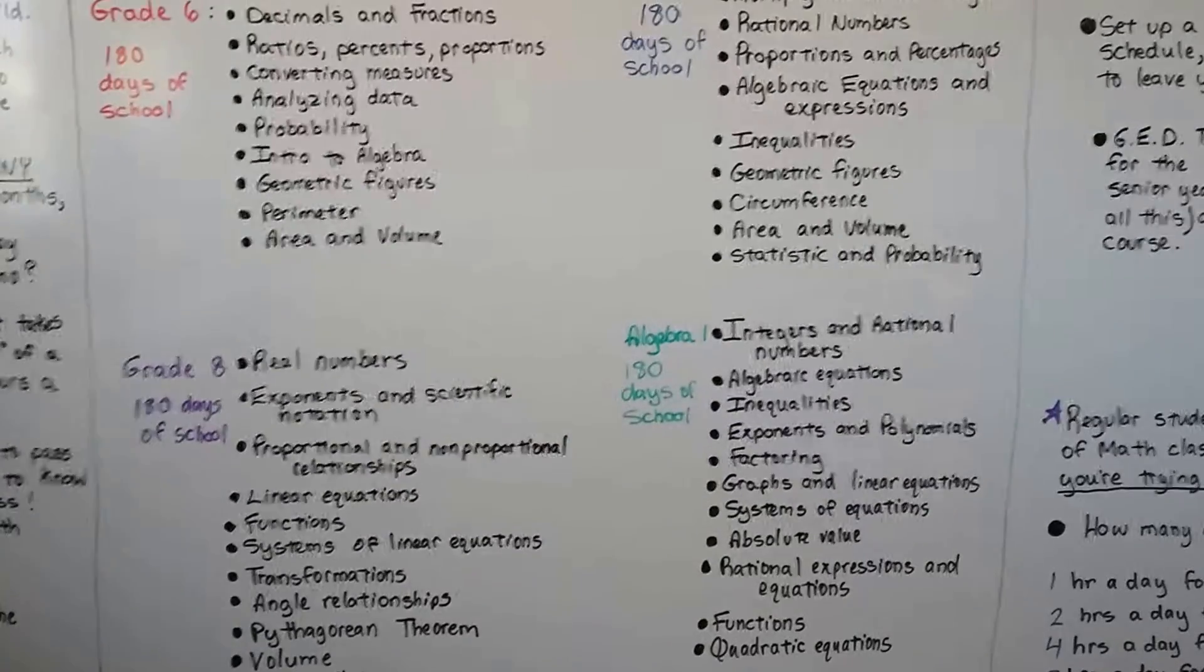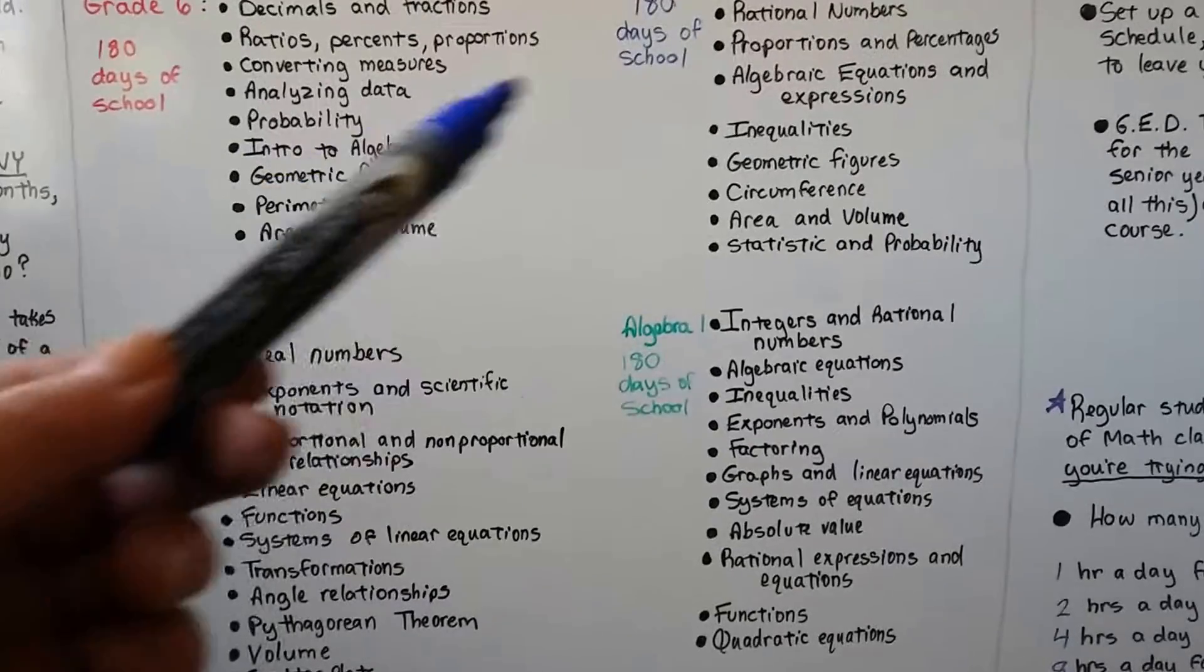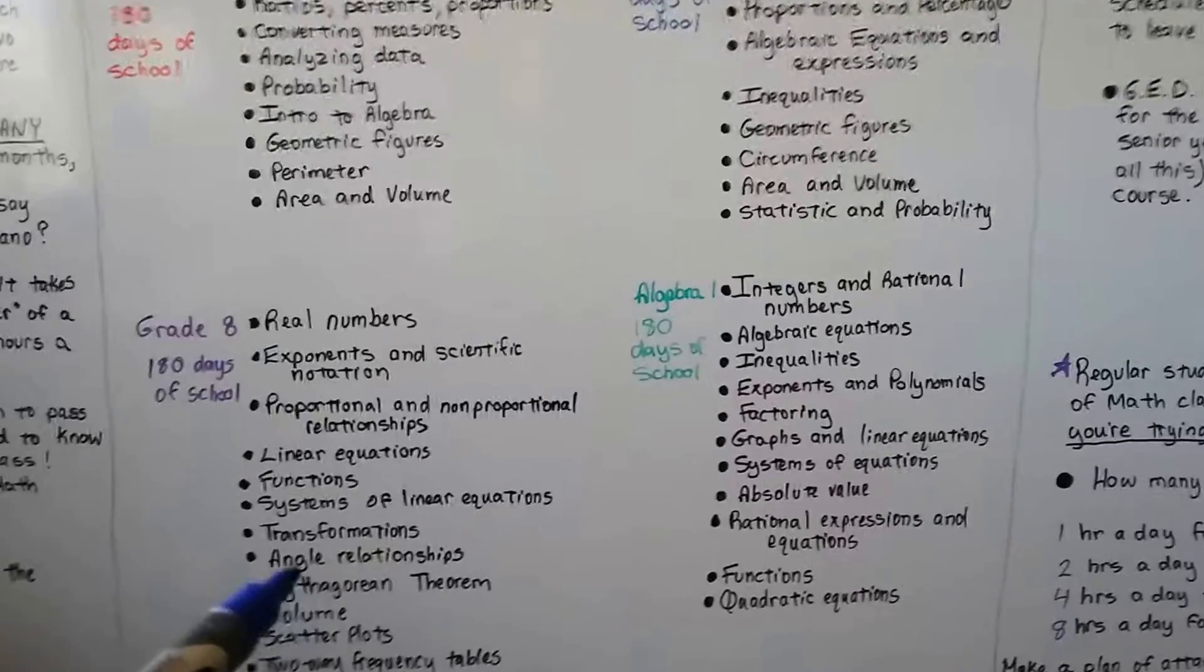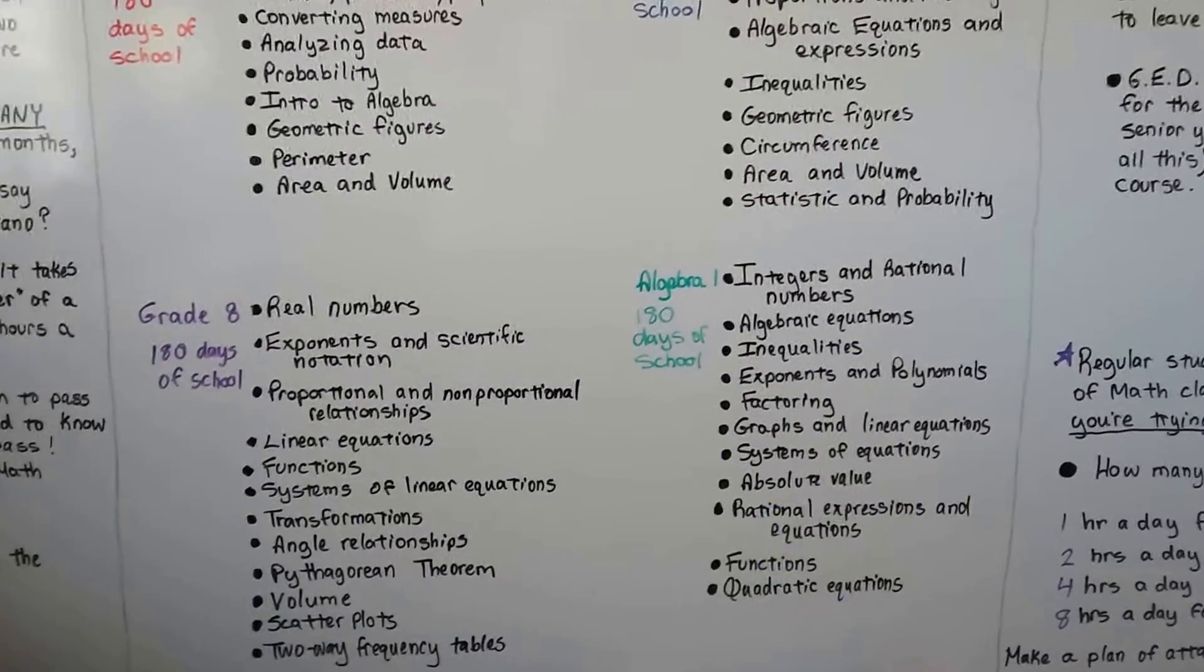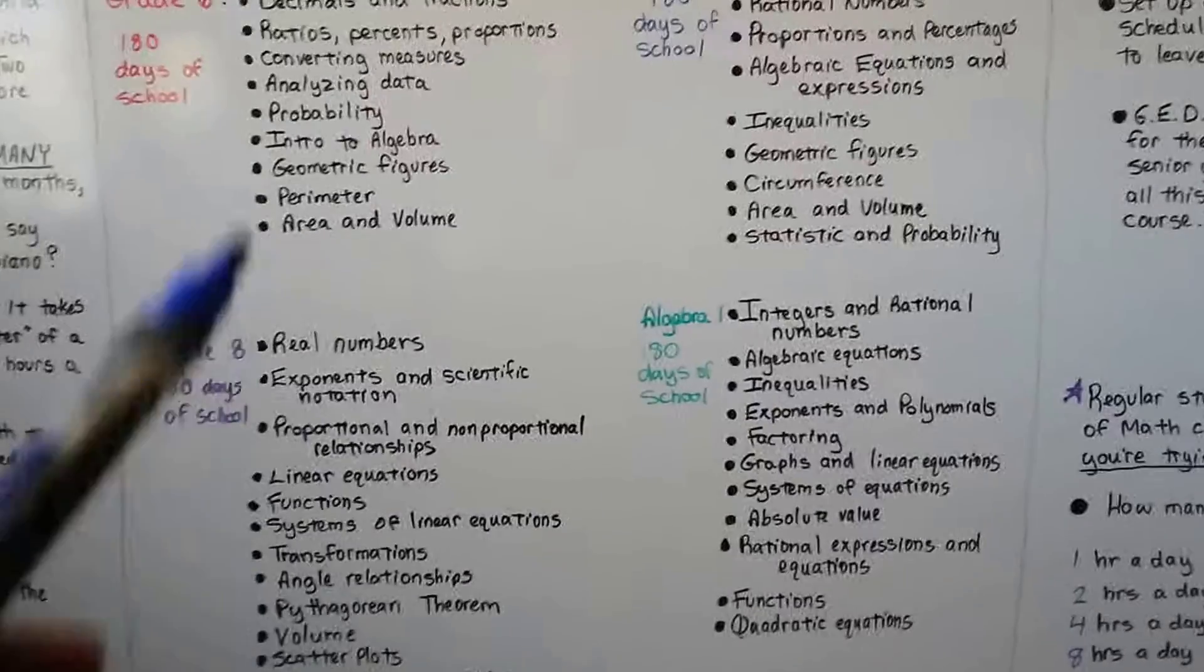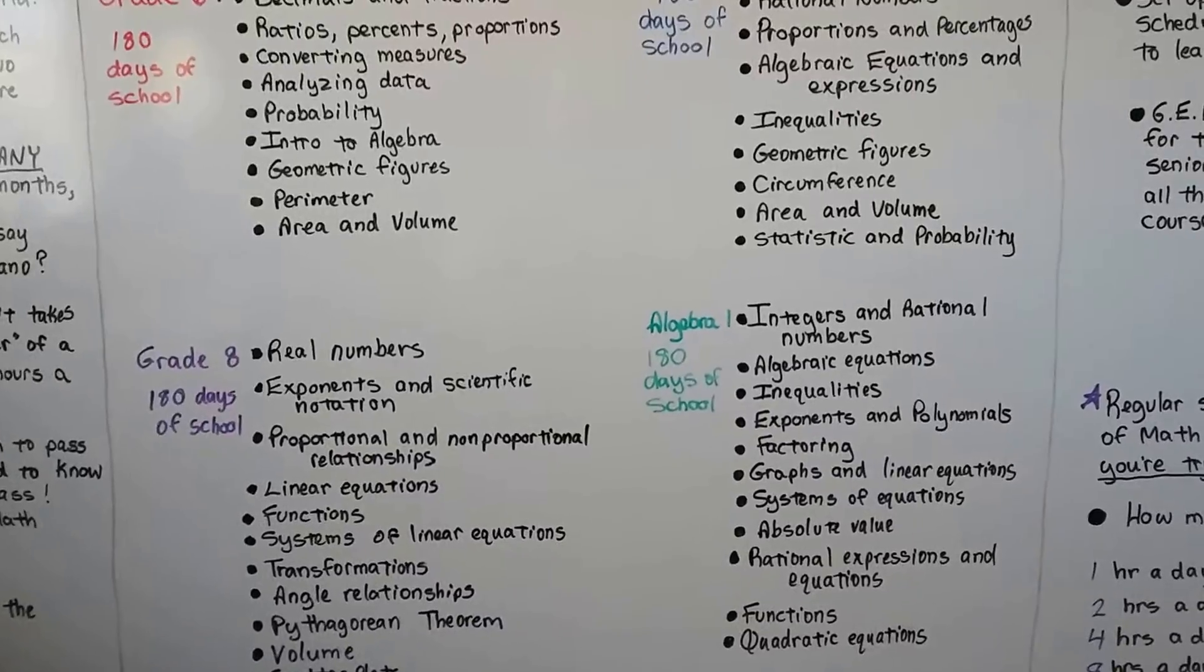Because the way learning works is whatever you learn here the next year, you learn it again, but with a little more information. And then you learn it again with a little more information and again with a little more information. So it's layered. And then your brain can retain it because it's slowly been layering as you learn instead of just cramming it all in.